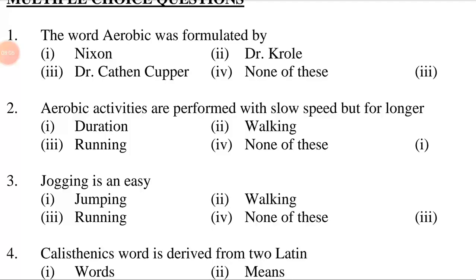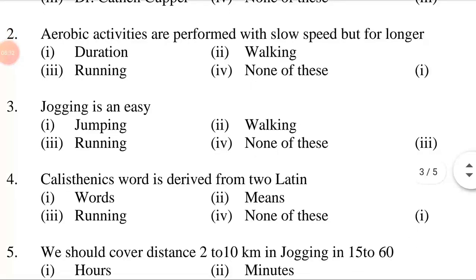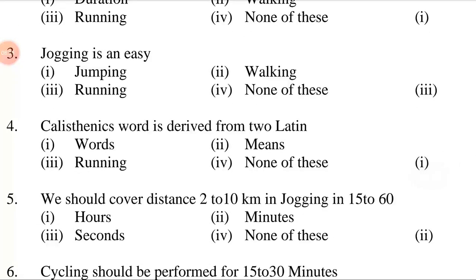Aerobic activities are performed with slow speed for longer dash. First option: duration. Second option: walking. Third option: running. Fourth option: none of these. The answer is first option — duration. Aerobic activities are performed with slow speed for longer duration. Jogging is an easy dash. First option: jumping. Second option: walking. Third option: running. Fourth option: none of these. The answer is third option — running. Jogging is an easy running.